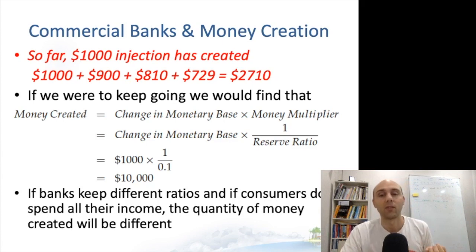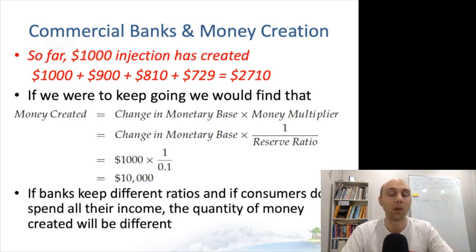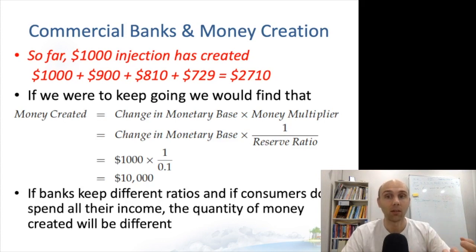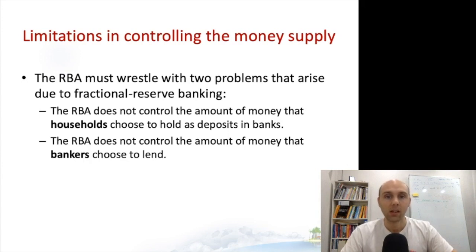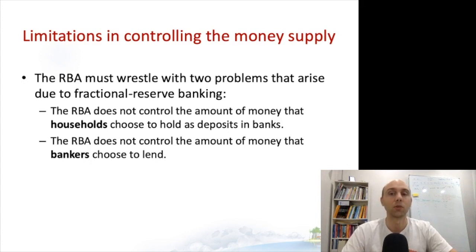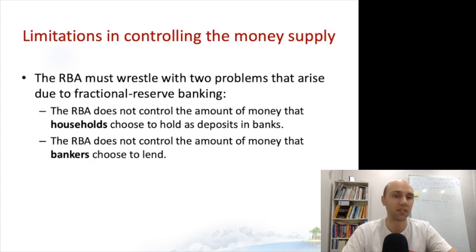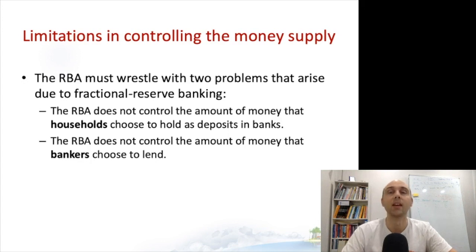This depends in reality on the different ratios kept and other factors, but in general the money is going to be multiplied, which means the RBA can make a substantial impact on the supply of money in the economy through its injections. There are a couple of issues for the RBA in controlling the money supply. Two problems arise from the fractional reserve banking scheme: the RBA can't control the amount of money that households choose to hold as deposits in banks, nor does it have any control over the amount of money that bankers choose to lend.